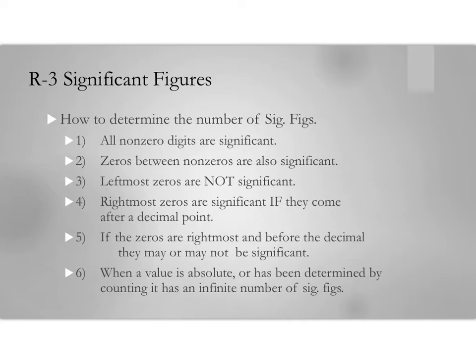Here are the rules for determining the number of significant figures. Rule one: all non-zero digits are always significant — that means 1, 2, 3, 4, 5, 6, 7, 8, 9. If you see those, they're significant.